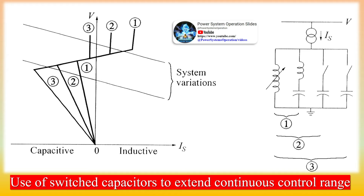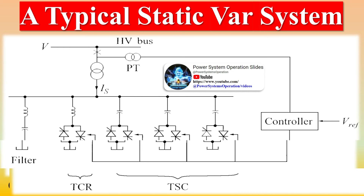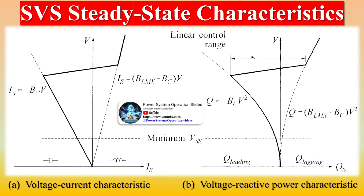The technical advantages of STATCOM over SVC are primarily: faster response, requires less space as bulky passive components such as reactors are eliminated, inherently modular and relocatable, it can be interfaced with real power sources such as battery, fuel cell, or SMES (superconducting magnetic energy storage). A STATCOM has superior performance during low-voltage conditions as the reactive current can be maintained constant. In an SVC, the capacitive reactive current drops linearly with the voltage at the limit of capacitive susceptance. It is even possible to increase the reactive current in a STATCOM under transient conditions if the devices are rated for the transient overload.